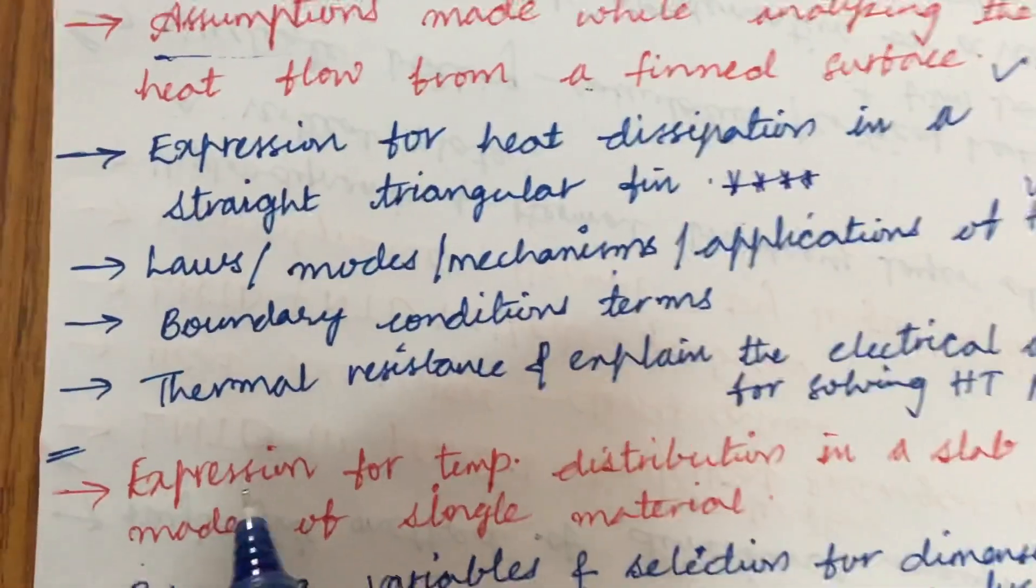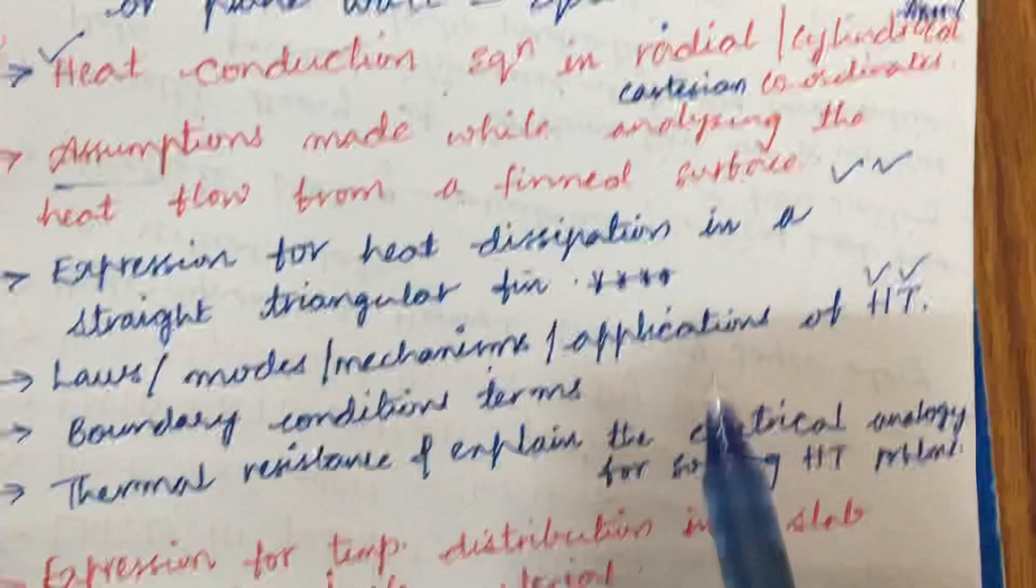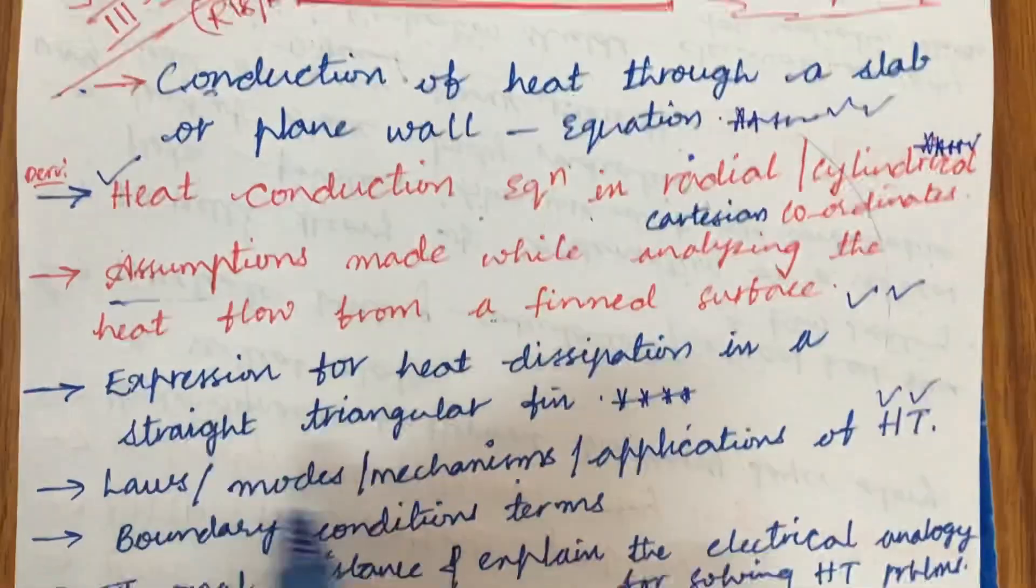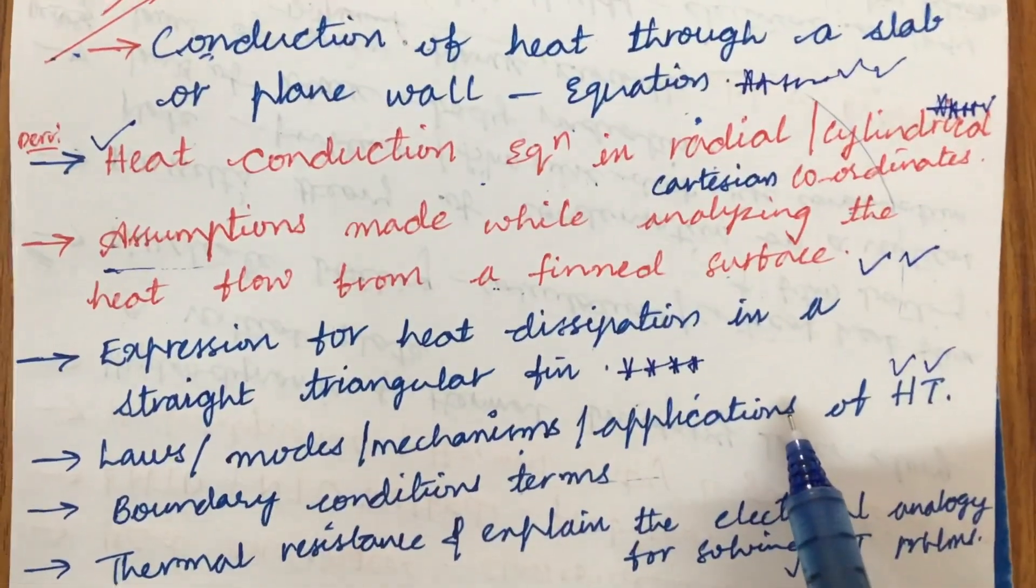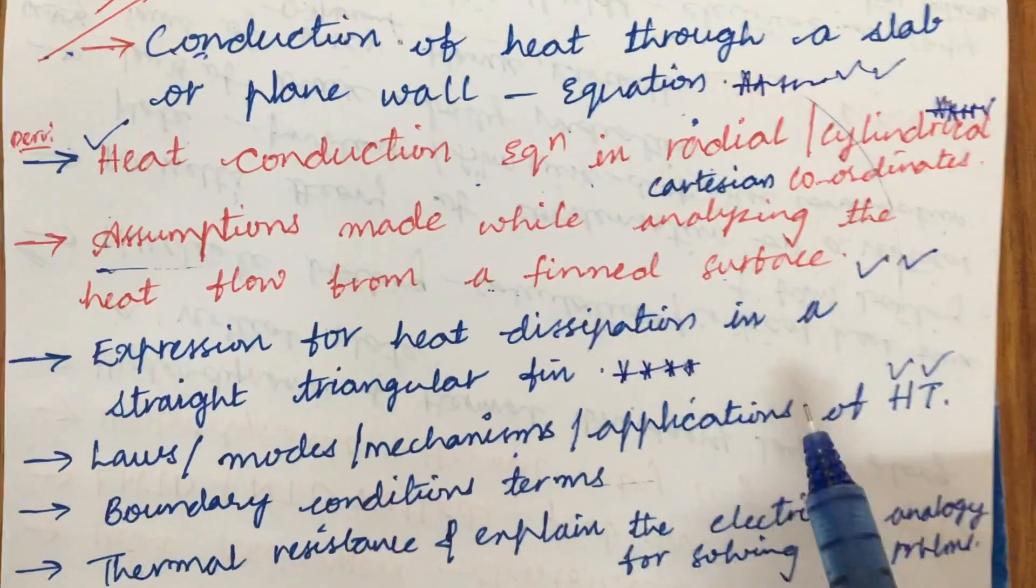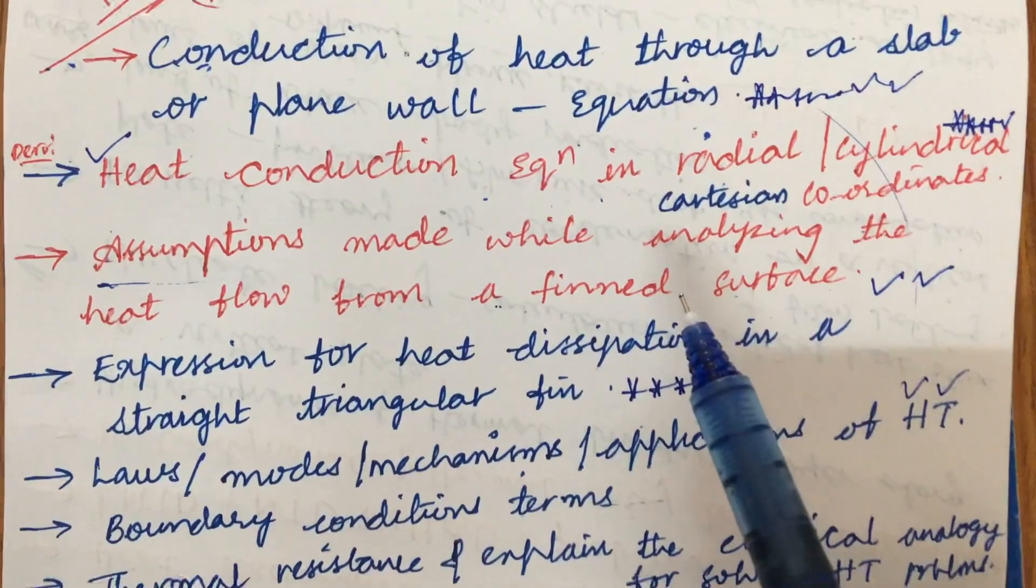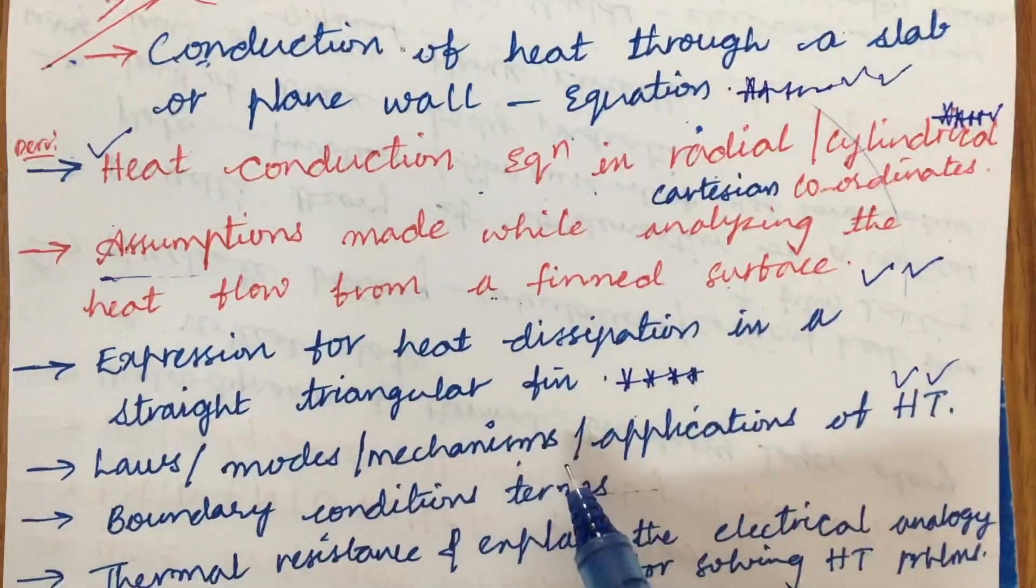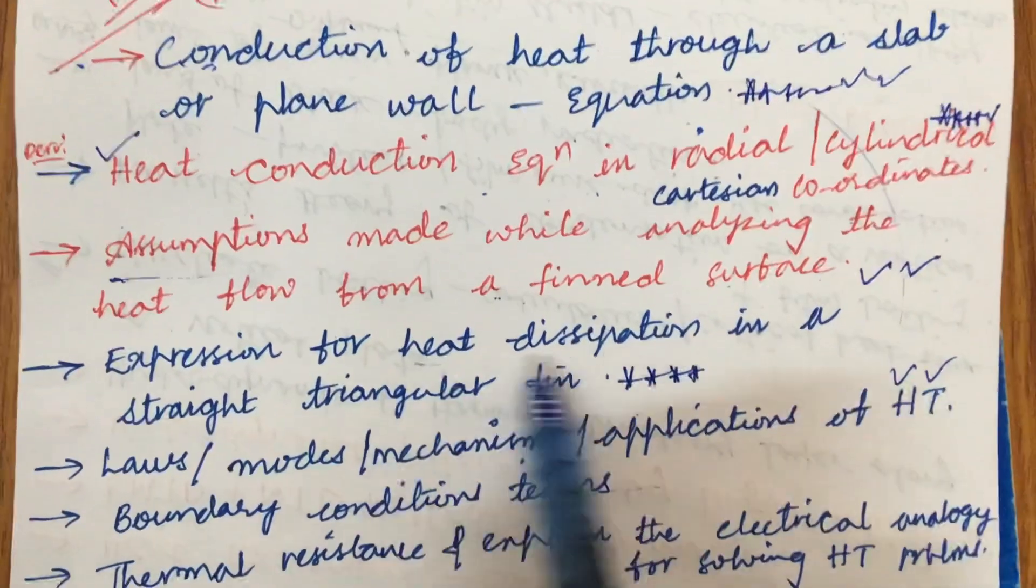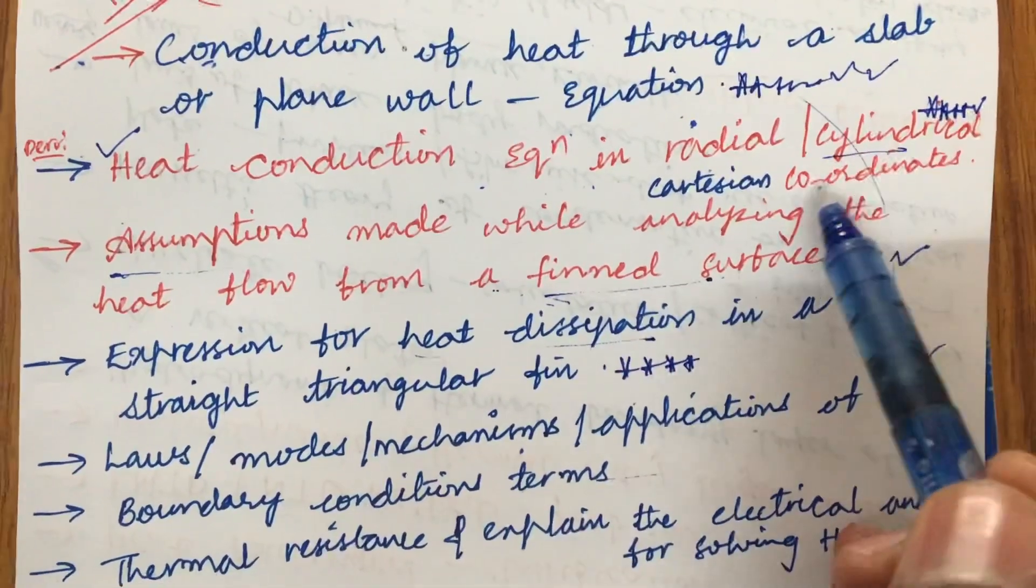Later, the expression for temperature distribution in a slab made of a single material. From these concepts you may be expecting two questions as well as the problems also. Make sure to work out the derivations as well as the problems related to heat dissipation as well as fin surfaces as well as the coordinating systems too.